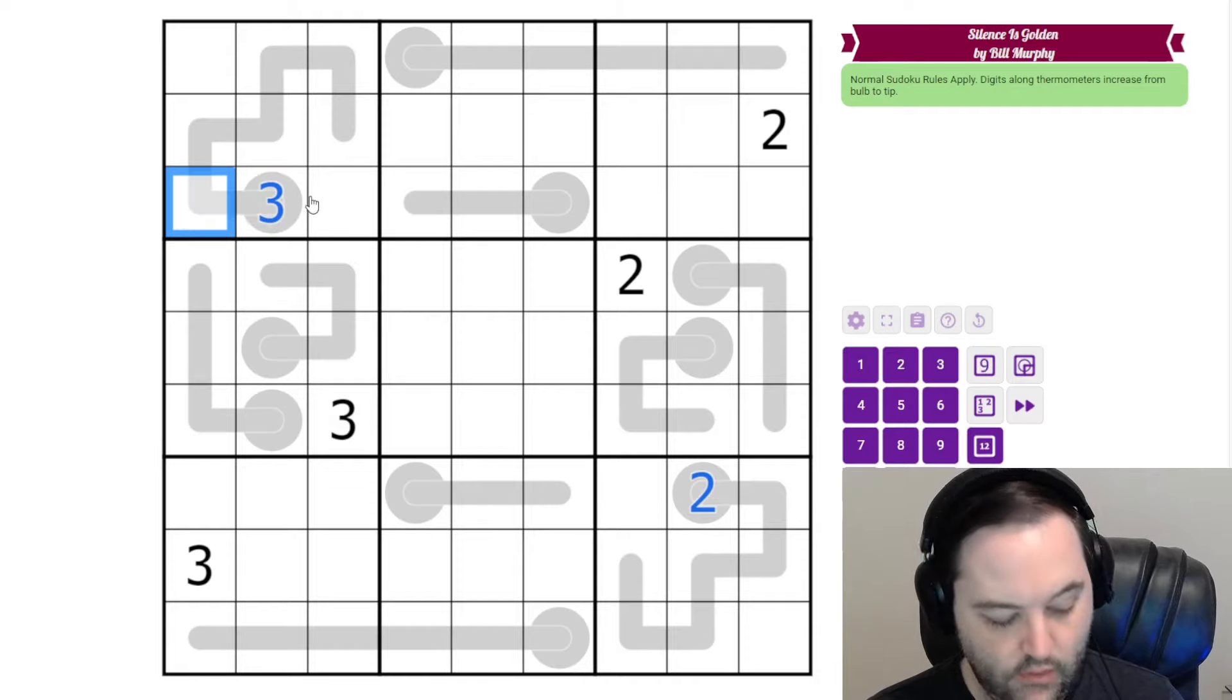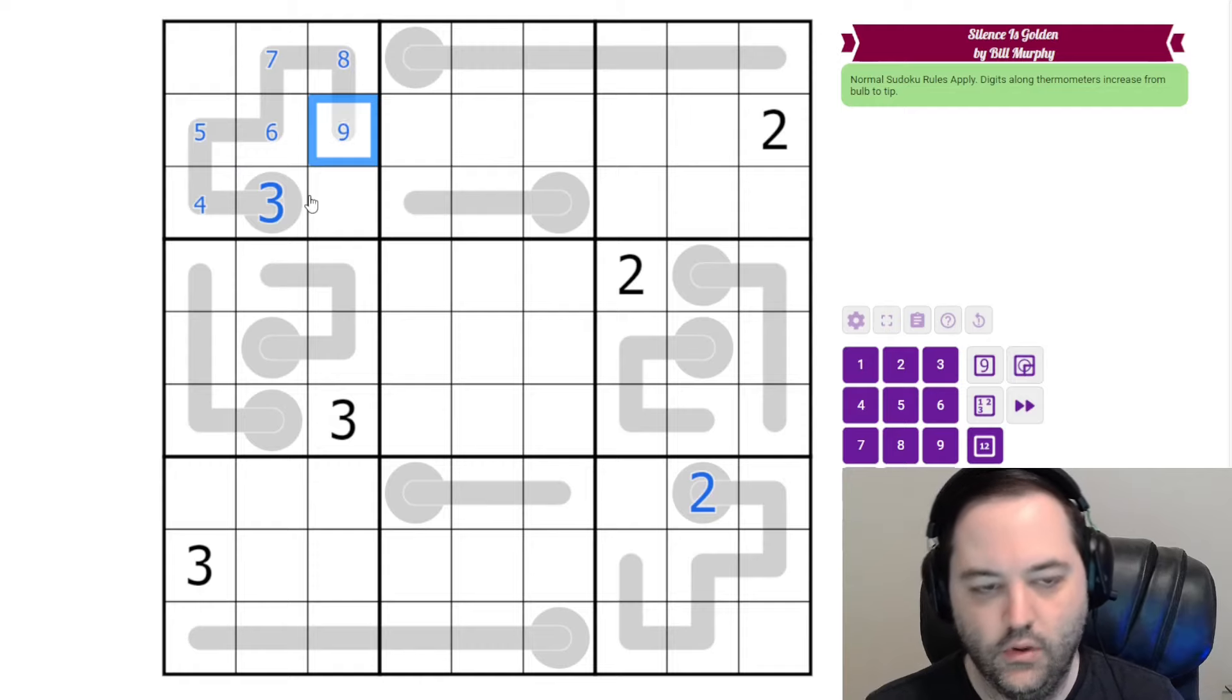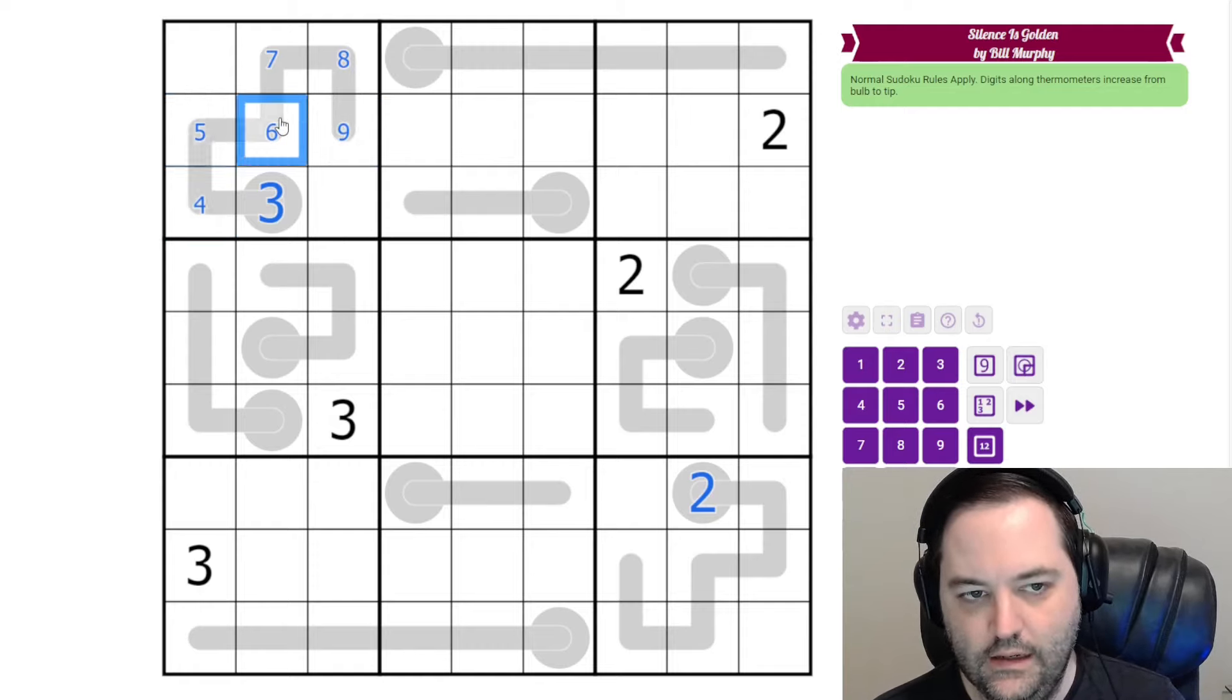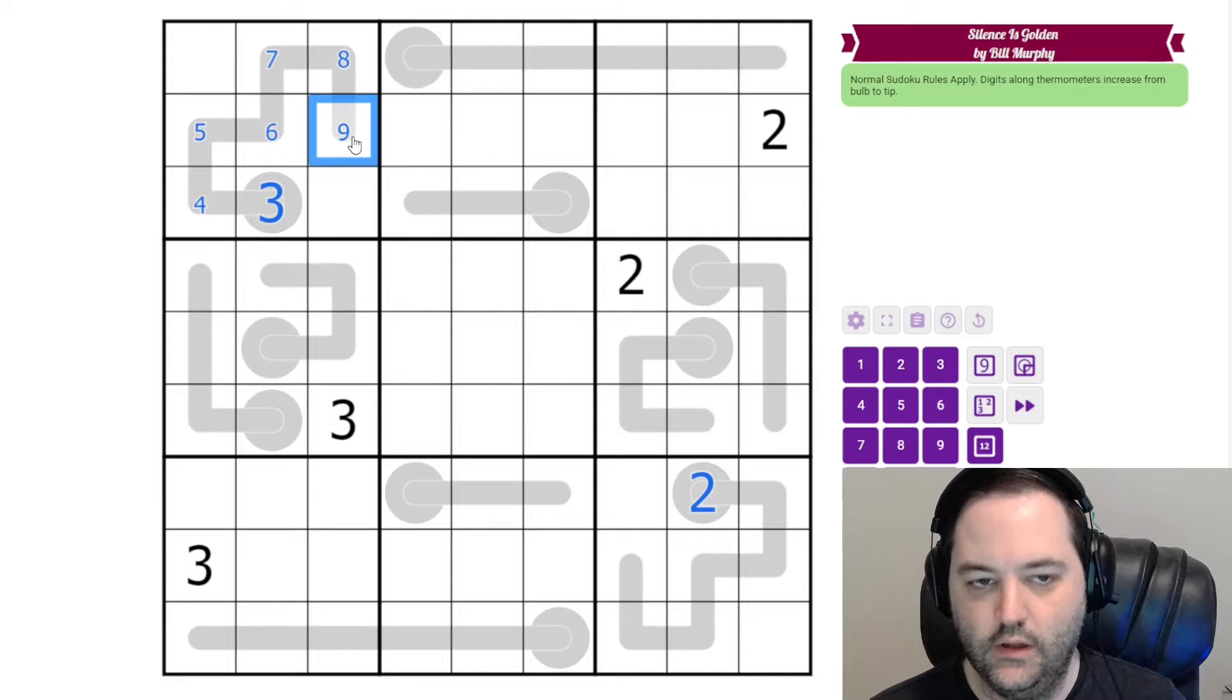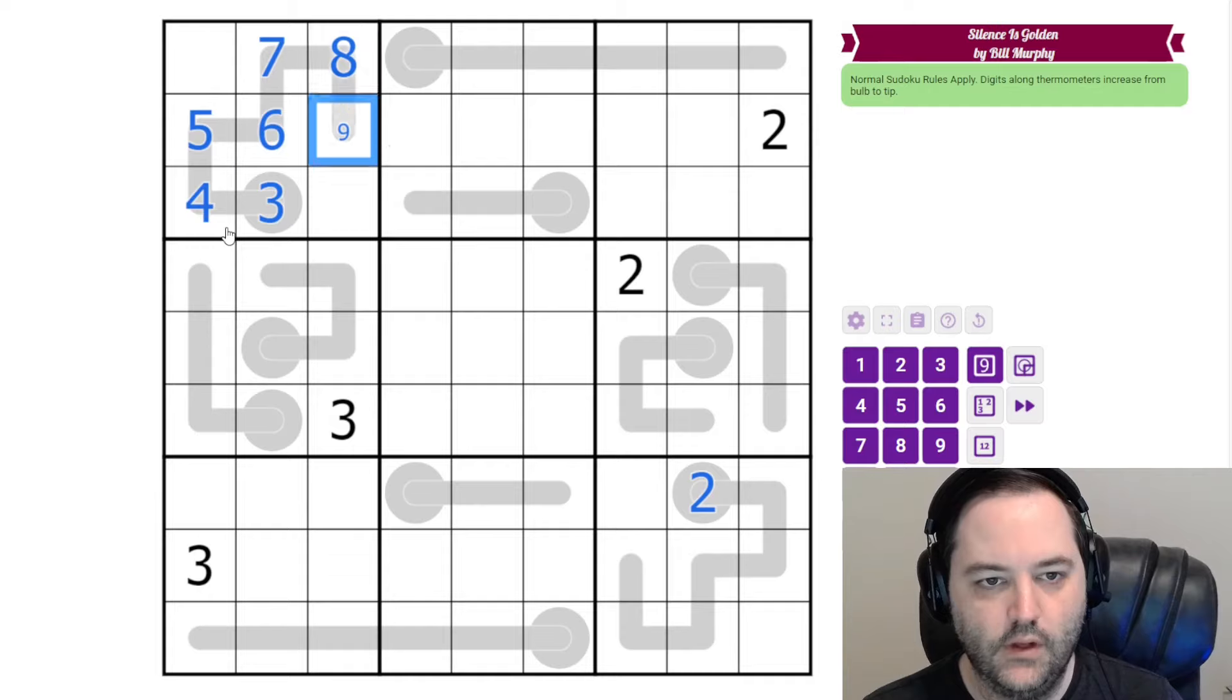The same is going to apply with the threes here. Three can't go in this cell because it would be three, two, one, zero. That breaks. So the only place for three in the box is in the bulb of the thermo. Now, in order to go up from three, four, five, six, seven, eight, nine. Well, that has to be it. If we make any of these digits any higher, we're going to need higher than nine in the last cell. So four, five, six, seven, eight, nine.